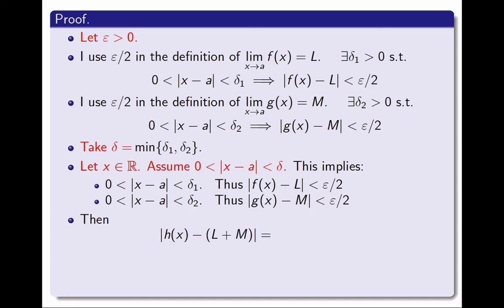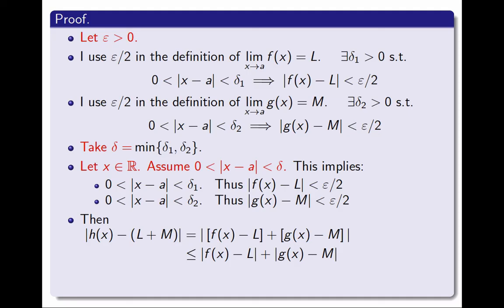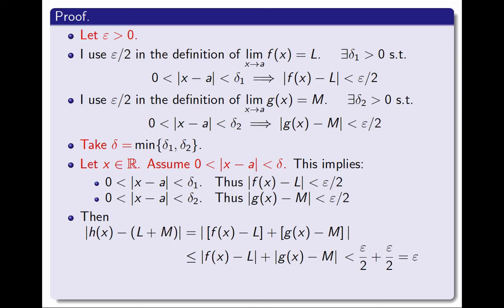And now I do some algebra. The distance between h and l plus m — I write h in terms of f and g, use the triangle inequality, and get the sum of two terms, each one being less than ε over 2. ε over 2 plus ε over 2 is ε. So I have concluded that the distance between h and l plus m is less than ε, as needed. And this completes the proof.